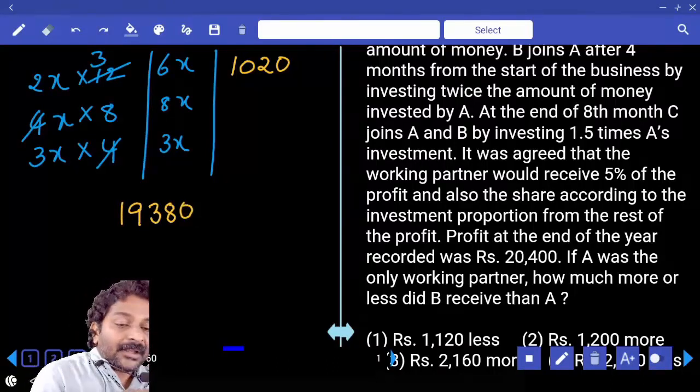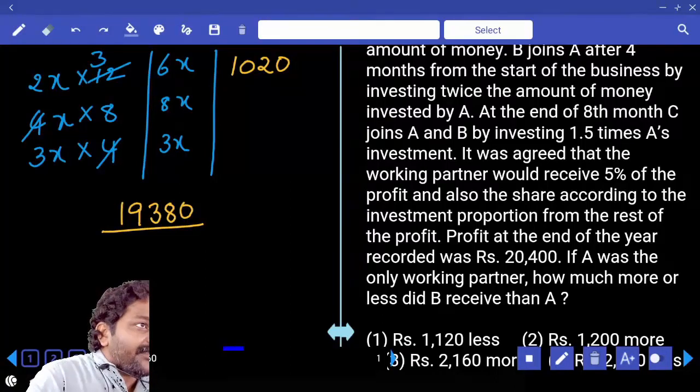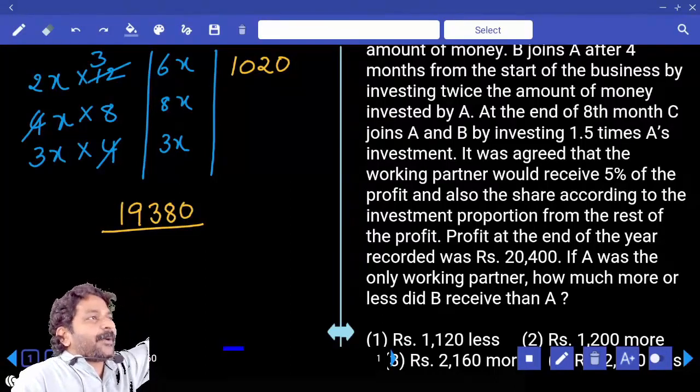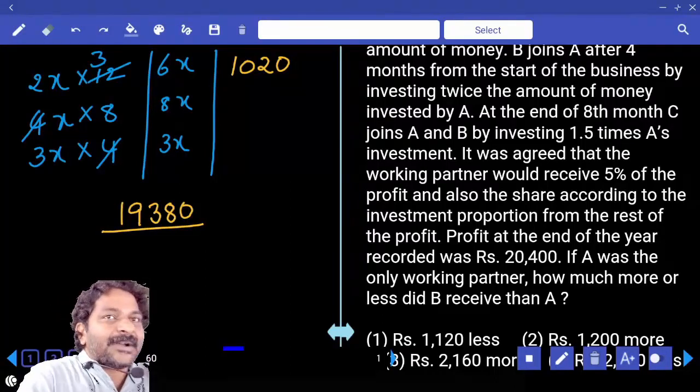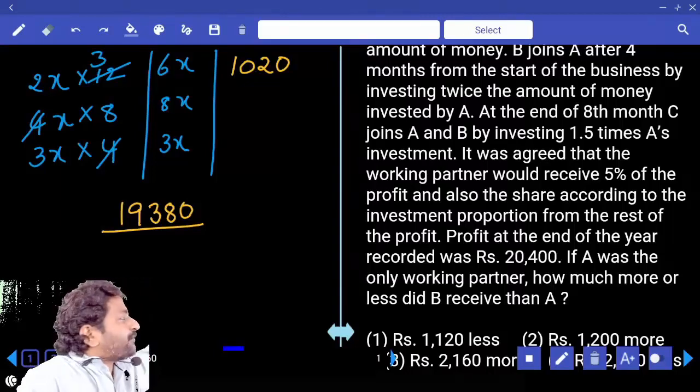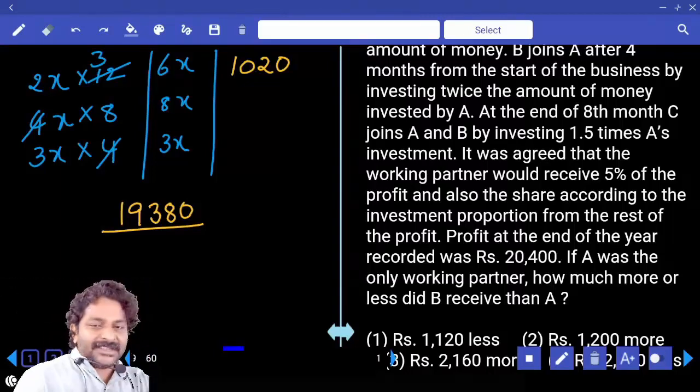Now this must be divided in 17 parts. And A gets 6 parts, B gets 8 parts, C gets 3 parts. Correct. How? Right. If 6 parts calculate, 8 parts calculate.